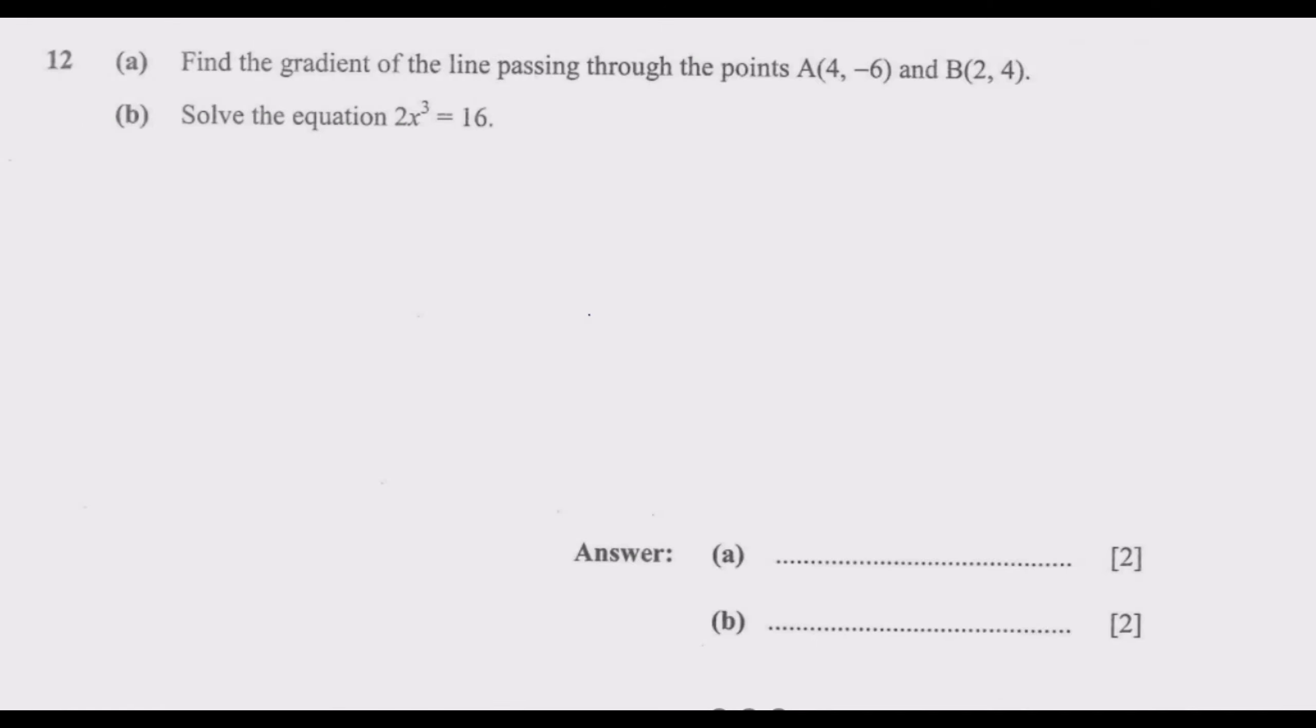Question 12a: Find the gradient of the line passing through the points A which is (4, -6) and B which is (2, 4). The question requires us to find the gradient.